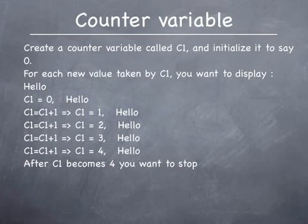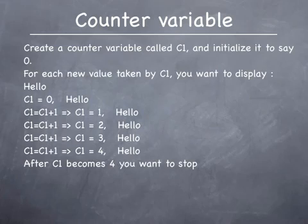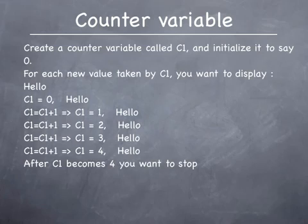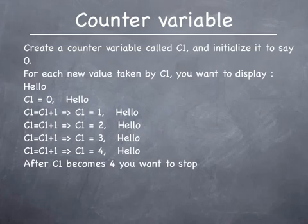We again use an increment statement to increase the existing value of C1 by 1 so C1 will become 3. For this value of C1, we display the word hello on the screen. Again, we use an increment statement to increase the existing value of C1 by 1 so C1 will become 4. For the value C1 equal to 4, we display the word hello on the screen. By now, the word hello has been displayed 5 times on the screen. We want to stop repeating the process of incrementing C1 and displaying hello on the screen. We can use the last value acquired by C1 to act as the terminator — that is, when C1 exceeds the value 4, we want to stop.